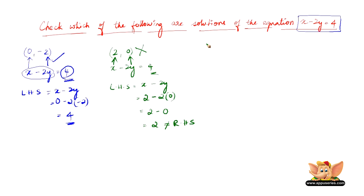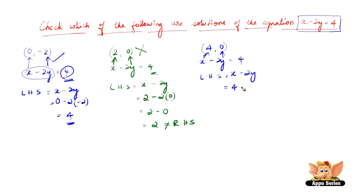Let us consider (4, 0). We have the same equation x minus 2y equals 4, and the left hand side is x minus 2y. Substituting x as 4 and y as 0, we have 4 minus 2 into 0, which is 4 minus 0, equals 4. This is equal to the RHS, which is 4. Therefore (4, 0) is indeed a solution of x minus 2y equals 4.